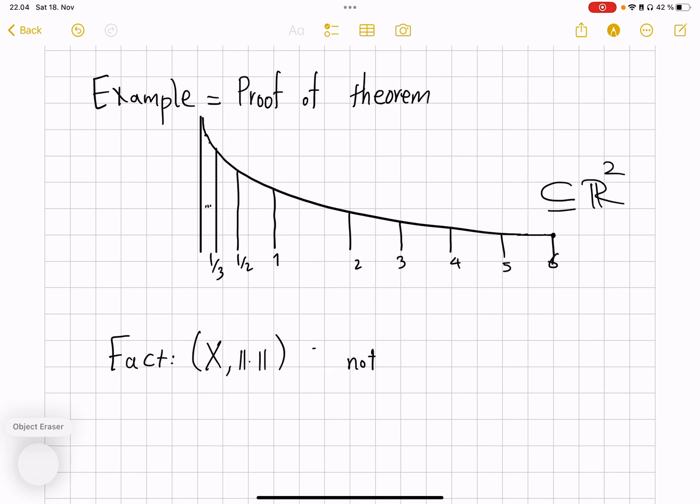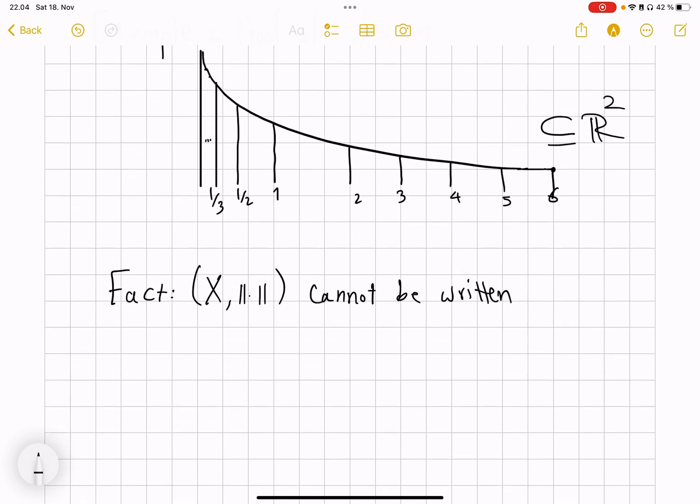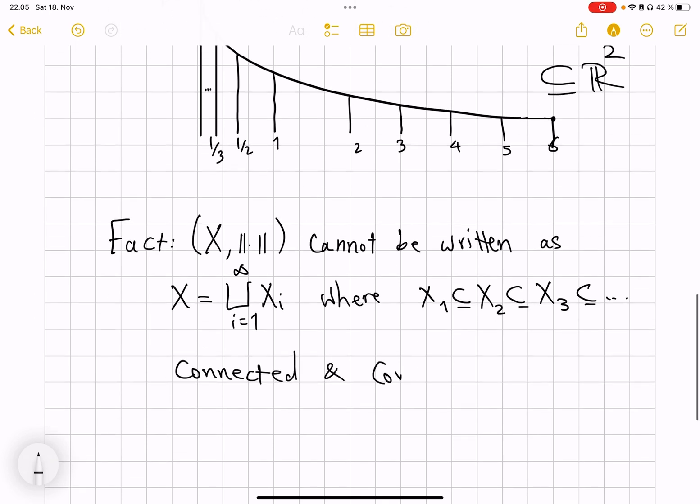You can prove that this space X with the Euclidean metric and topology on it cannot be written in the following form. So this space, this picture I have, this subset of R^2 cannot be written as X equal union of X_i where these are increasing chain of connected and compact X_i.